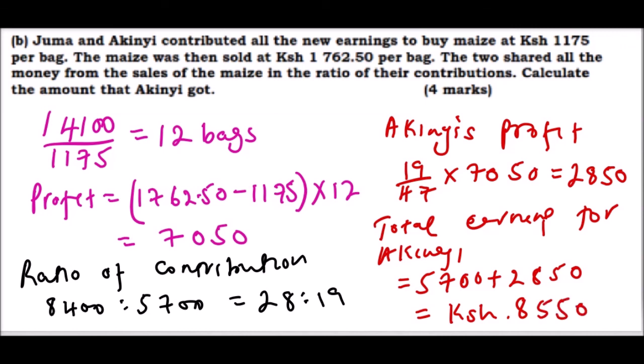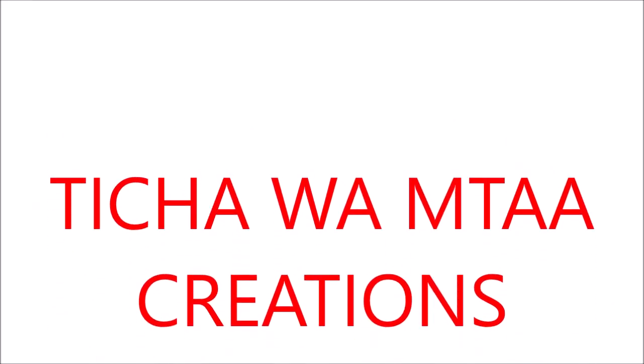That is the total amount that Akinyi got after they did that business. That is how you get 4 marks, and when you total with 6 marks of part A you get 10. This is a question you can manage to get the whole mark of 10 marks very easily.